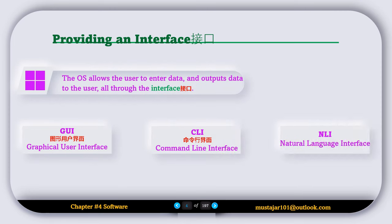Now we are going to discuss the first feature of the operating system, which is providing an interface. The operating system allows the user to enter data and output data all through the interface. There are three types of interfaces: the first is called the GUI or graphical user interface, then we have the CLI or command line interface, and the last one is called NLI or natural language interface.